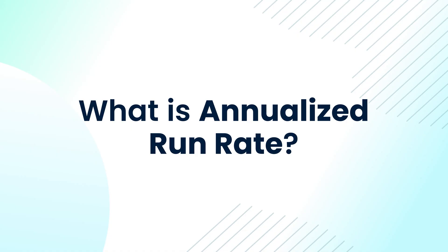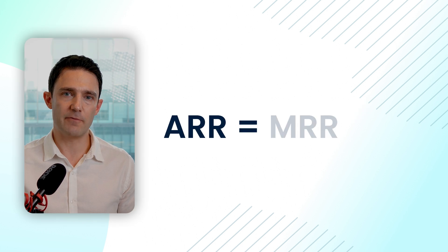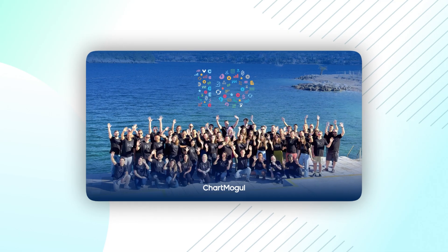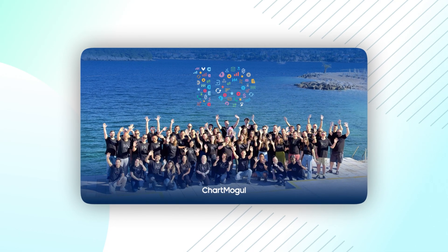So what is annualized run rate and why is it useful? Annualized run rate is really just your MRR multiplied by 12. Once you've been around for a few years — like ChartMogul, we've been in business for over 10 years — after a couple of years in SaaS, you just naturally start to think in terms of years and not months. That's why annual run rate is just a more helpful way to think about your business.